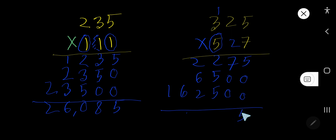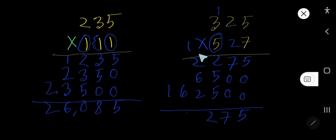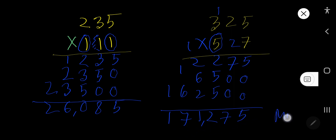Now add all partial products: 5, 0, 0, 5 — then 7, 0, 0, 7 — then 5 plus 5 is 10, plus 2 is 12, write 2 carry 1. 6 plus 2 is 8, plus 2 is 10, plus 1 is 11, write 1 carry 1. Then 7. This is the result. I hope, believe, and expect that now you can multiply a three-digit number by another three-digit number.